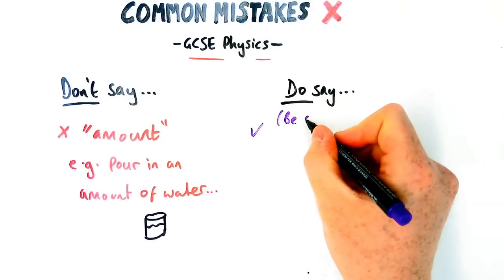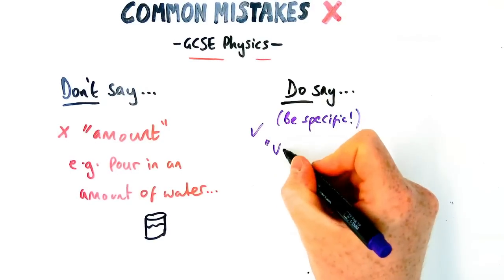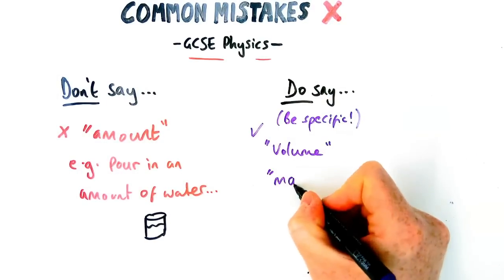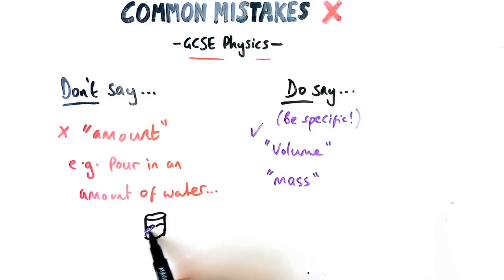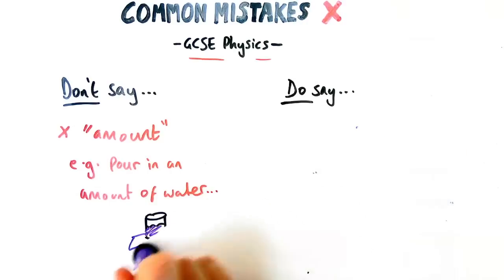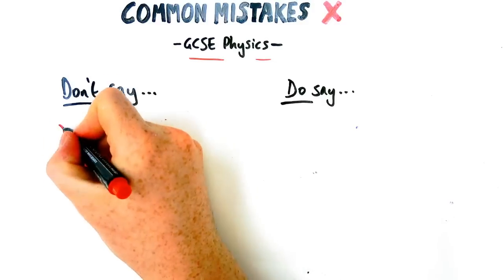You need to be specific in particular with these practical questions when you're talking about what you're measuring. So for example, volume or mass. If it's volume of liquid, that's what goes into a measuring cylinder or a beaker. If it's mass, you do that by putting on the scales. That is really important. You're being specific.